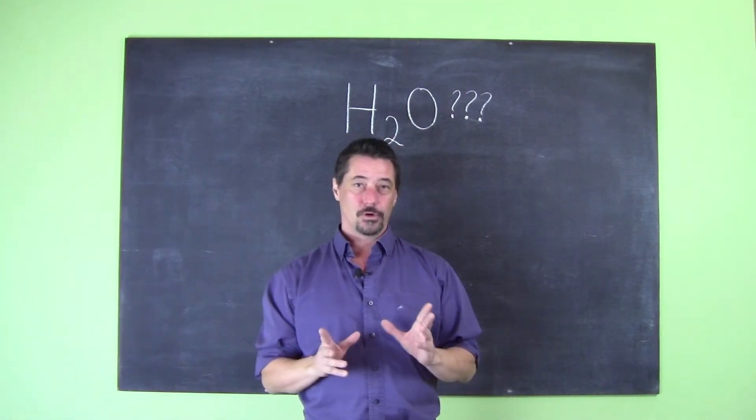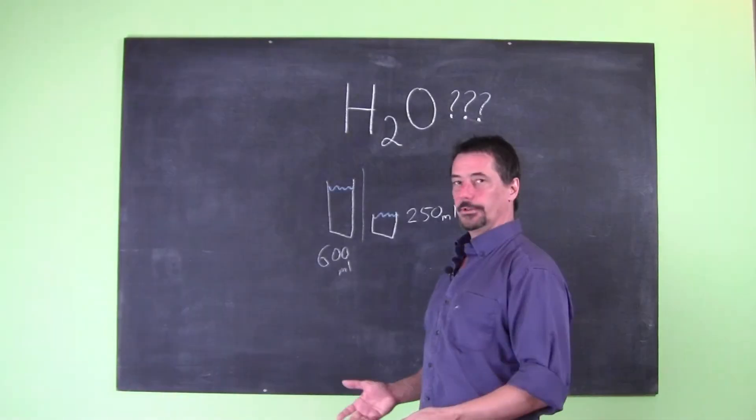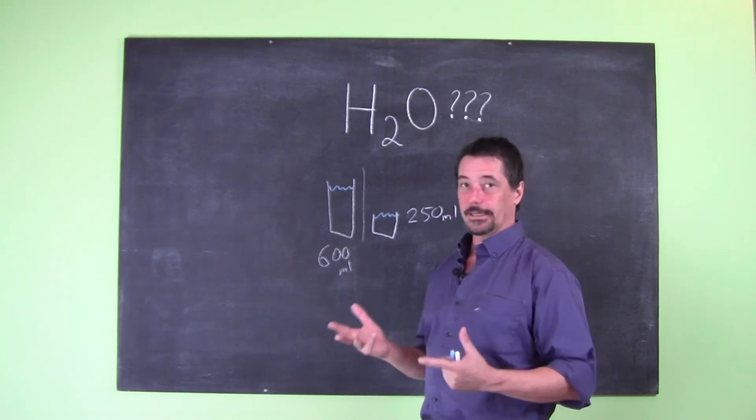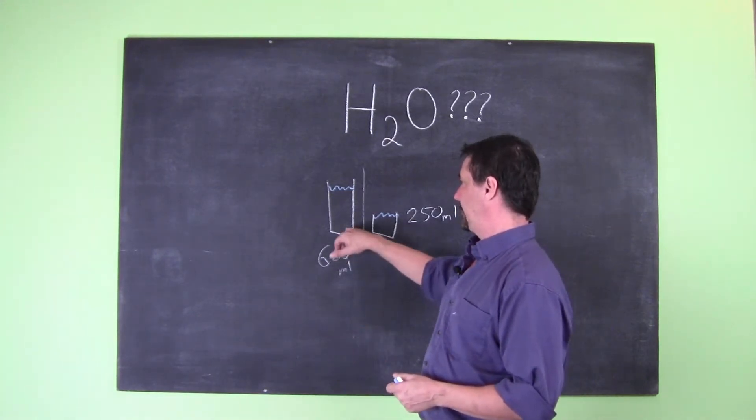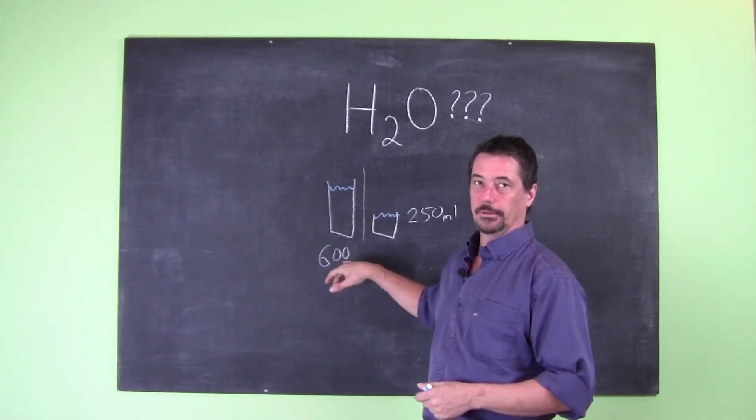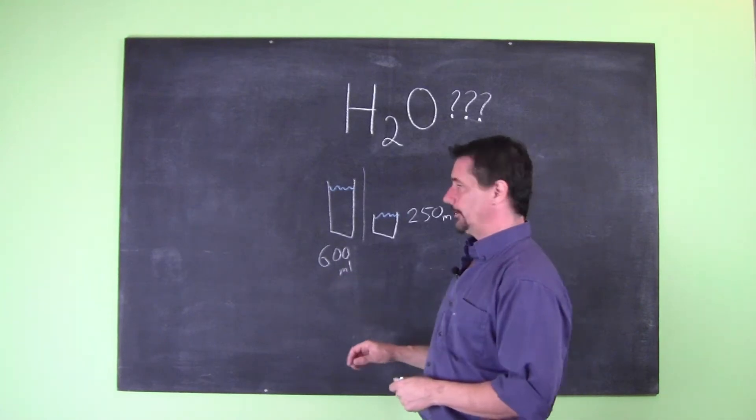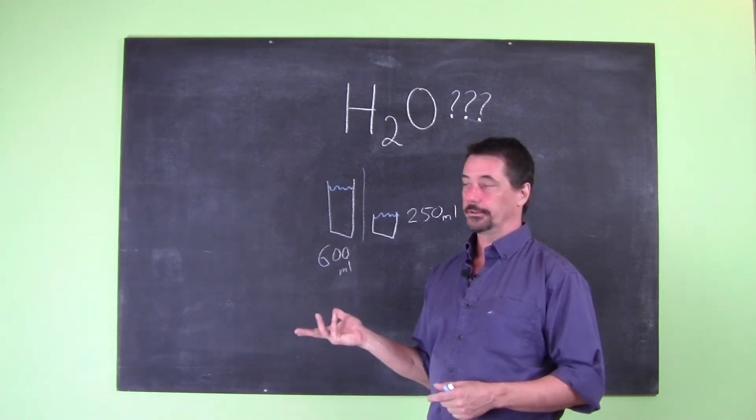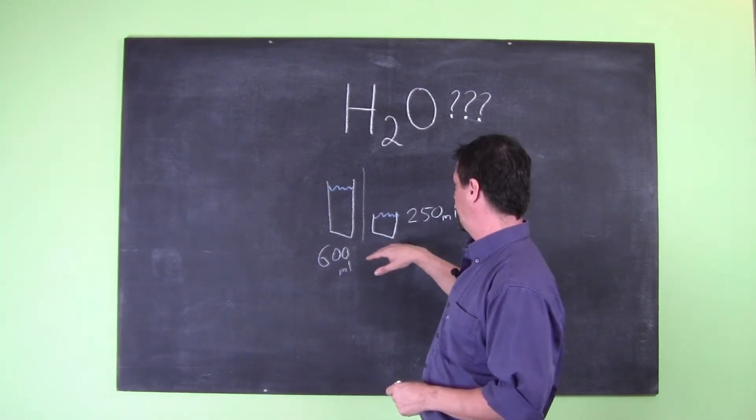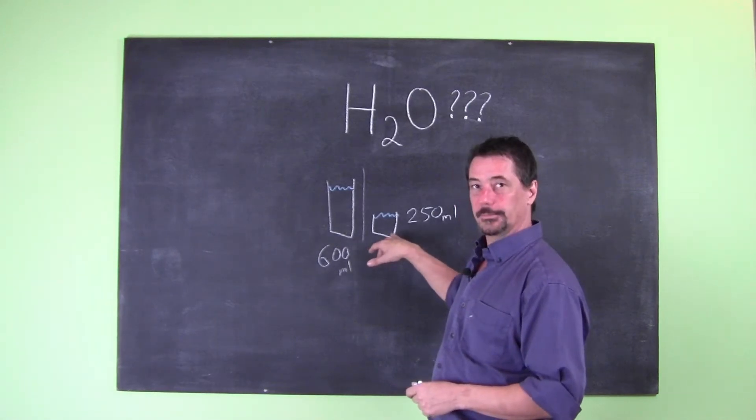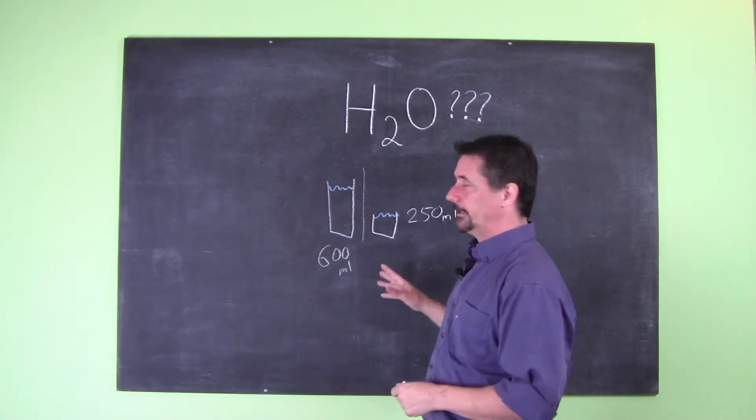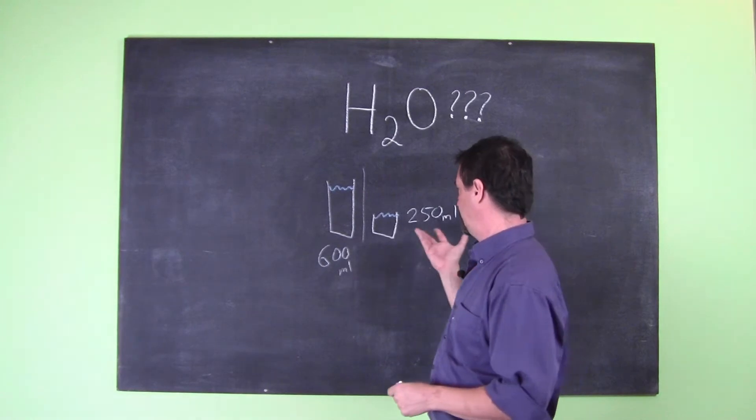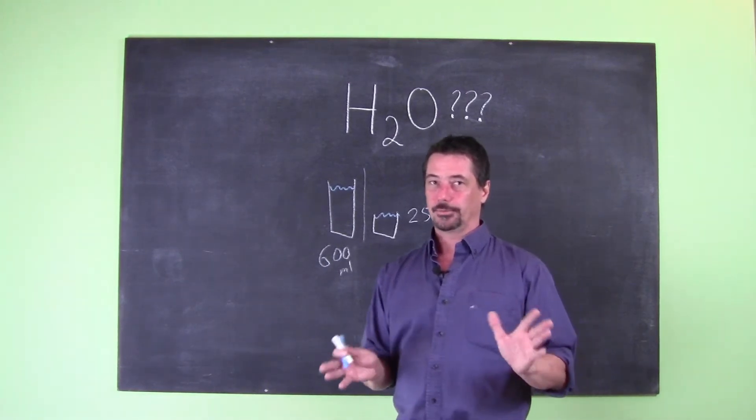So, let's look at this eight glasses of water a day myth. If you were to drink eight glasses of water a day, you're going to be drinking eight times about 600 milliliters. So that's at least four liters, almost five. Now, if you're going to have eight cups, which is 250 milliliters, that's different. That works out to be two liters. Now again, two liters is a pretty good thing to aim for.